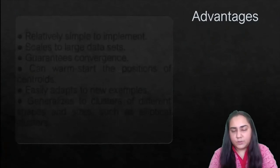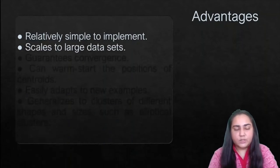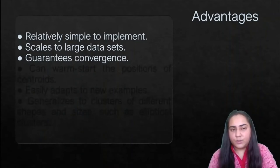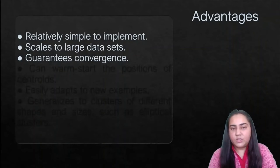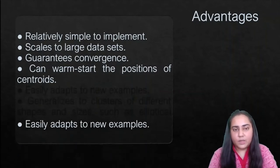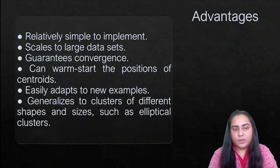Some advantages of k-means clustering: it is relatively simple to implement, and with modern libraries it's even simpler. It scales to large datasets, guarantees convergence — unlike some other algorithms — and can warm-start the positions of centroids. It also easily adapts to new examples introduced into the dataset, and generalizes clusters of different shapes and sizes, including elliptical clusters.